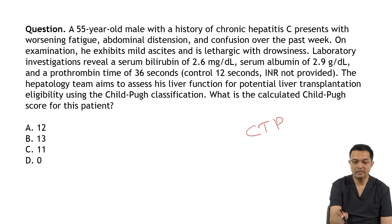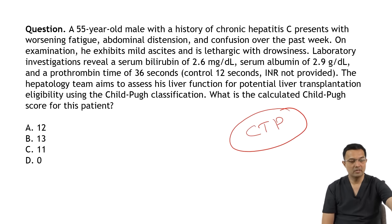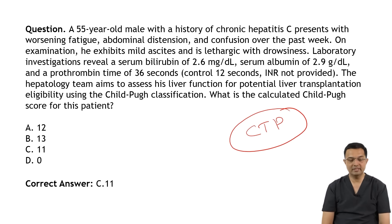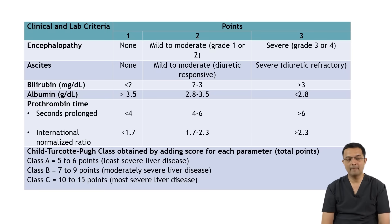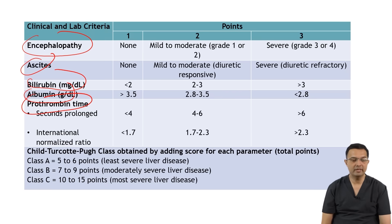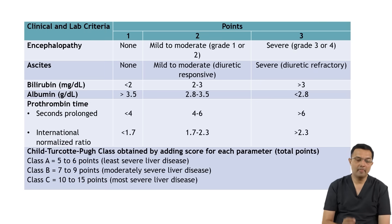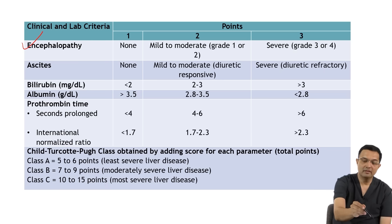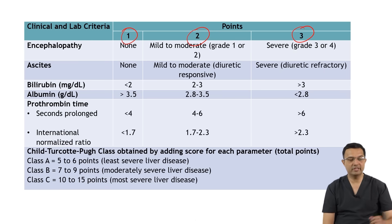The correct answer is C, that is 11. Let us discuss the CTP score. Child-Pugh classification involves five factors: encephalopathy, ascites, bilirubin, albumin, and prothrombin time. Each factor is given a score of 1, 2, or 3 based on severity. If there is no encephalopathy, the score given is 1.